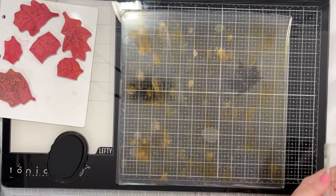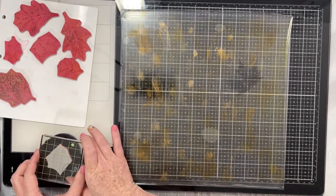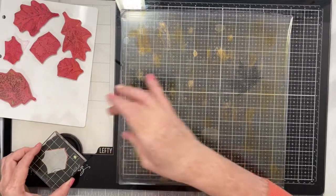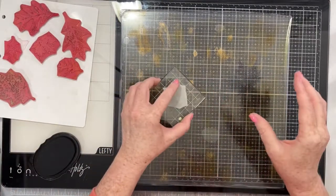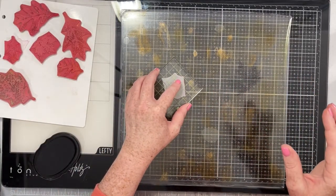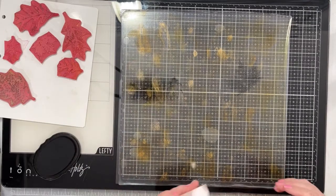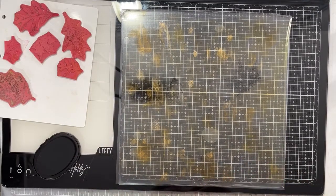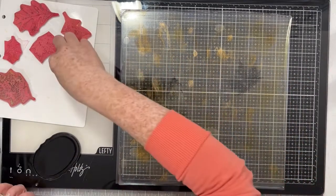I'm using an acrylic block. I am coating the stamps, getting a nice layer of that permanent black ink on my stamp, and then I'm just stamping it down right on the gel press. This doesn't have to be perfect.